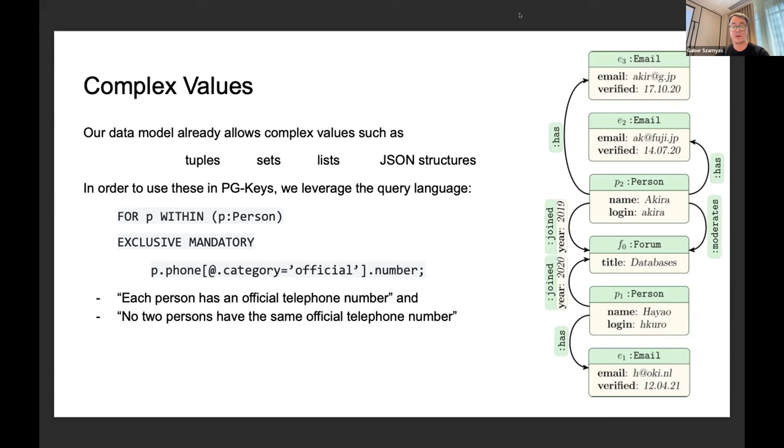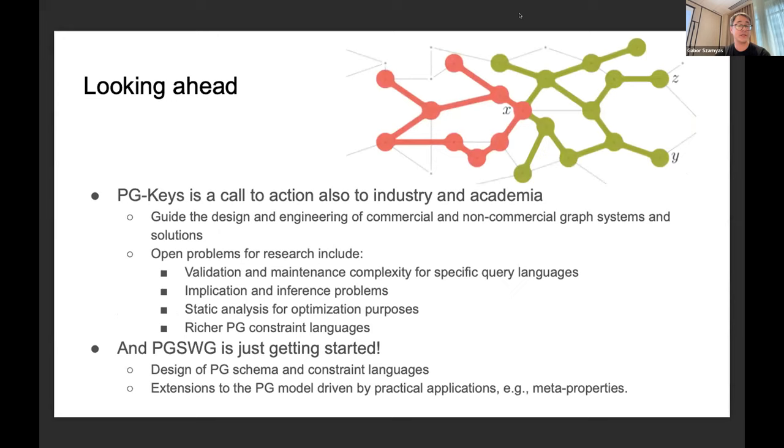Looking ahead, PG-Keys is not currently being taken up into the first version of GQL, but it's really a call to action to industry and academia to guide design and thinking and engineering commercial and academic graph systems and solutions. There are lots of interesting research problems that follow from this work. For example, validation and maintenance, complexity for specific concrete languages that you use to realize PG-Keys, basic questions such as simplification and implication reasoning about those problems for PG-Keys, static analysis in the presence of PG-Keys for query optimization.